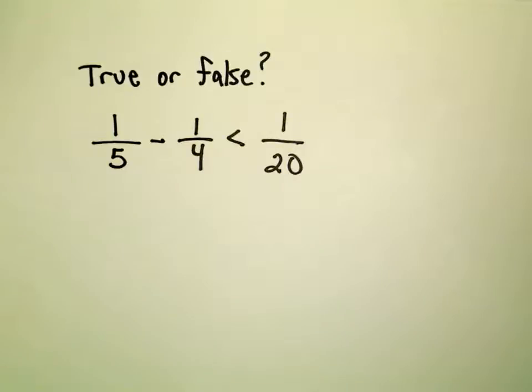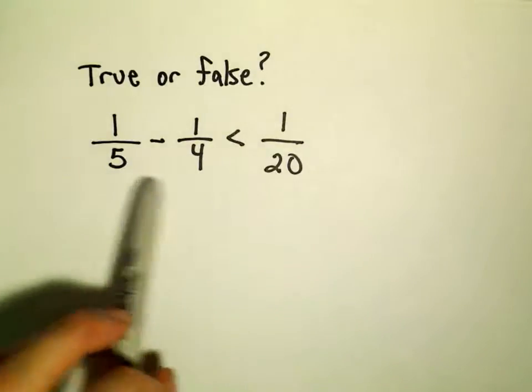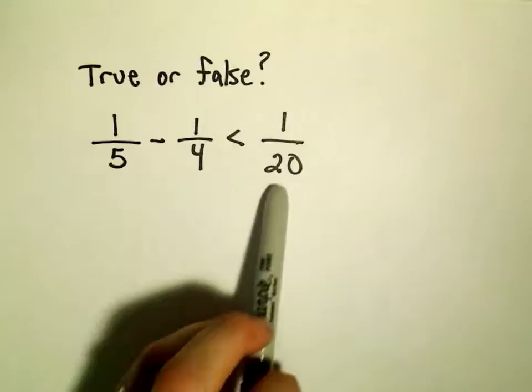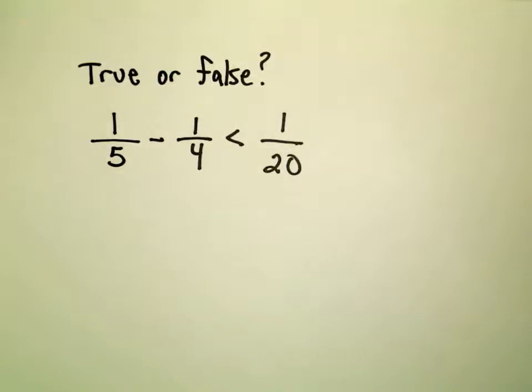And there's certainly different ways you could do it. You could convert the left side into decimals and subtract. You could convert the right side into a decimal. But what I'm going to do is I'm going to just make the left side into a single fraction.